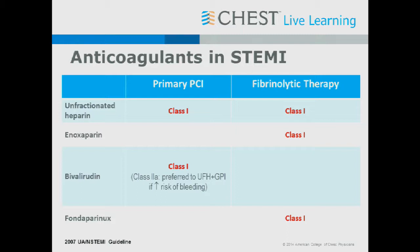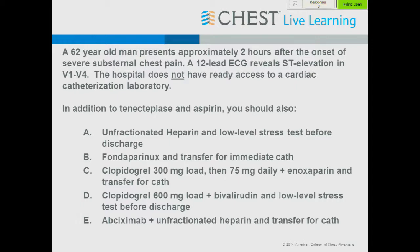Bivalirudin and 2B3A inhibitors are largely cath lab drugs that cardiologists use — you shouldn't need them in upstream therapy. Certain drugs are preferred in the invasive strategy because they've been studied primarily as adjuncts to percutaneous intervention, not in patients managed conservatively or in the ER. These distinctions lead to the current recommendations.